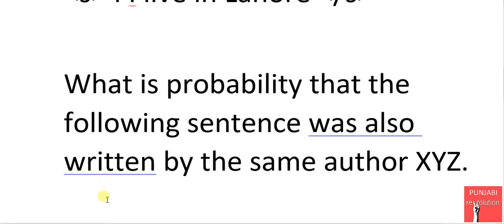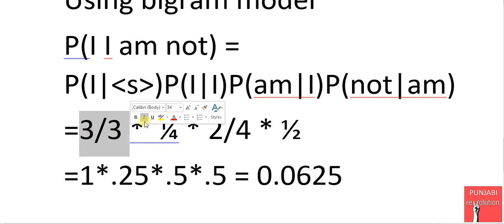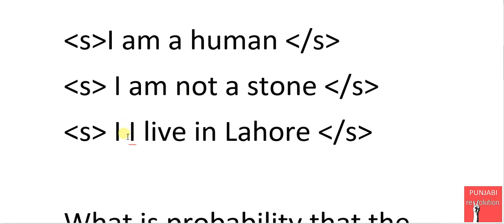And here, probability of I given I means the count of II divided by the count of total I. So II occurs just one time and total I occurs 1, 2, 3, 4 times, so it will be 1 over 4.